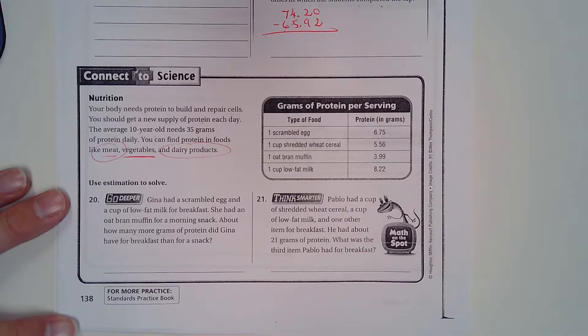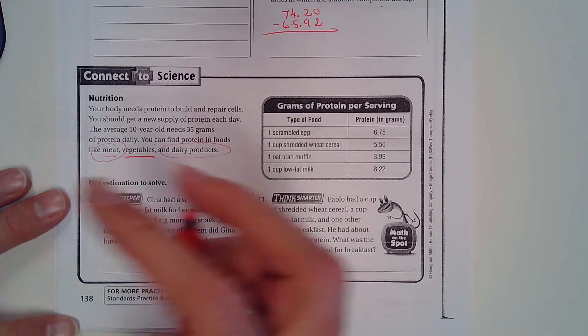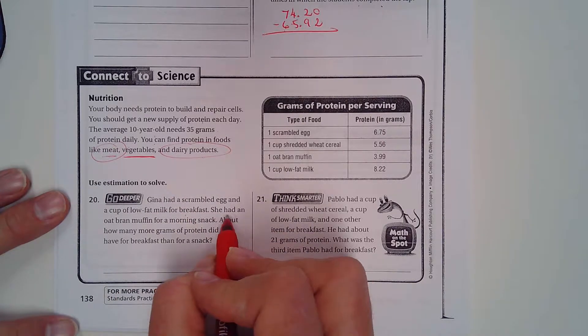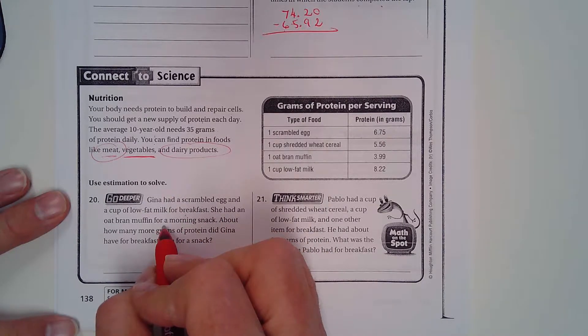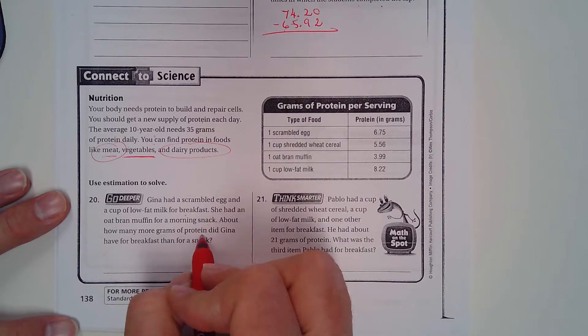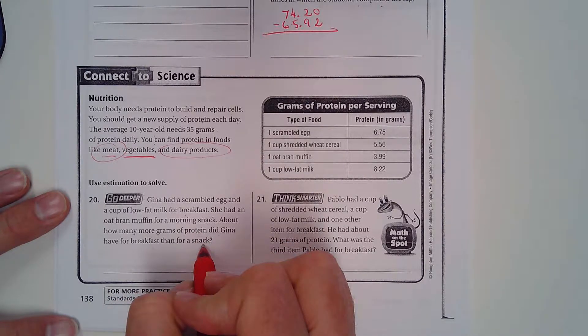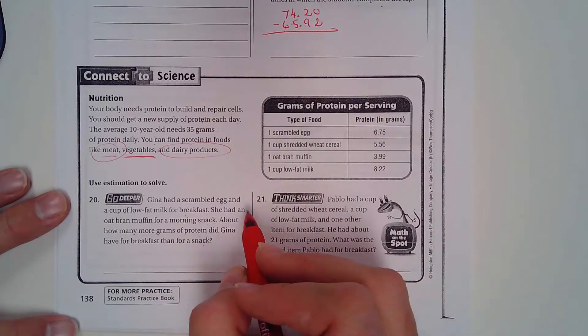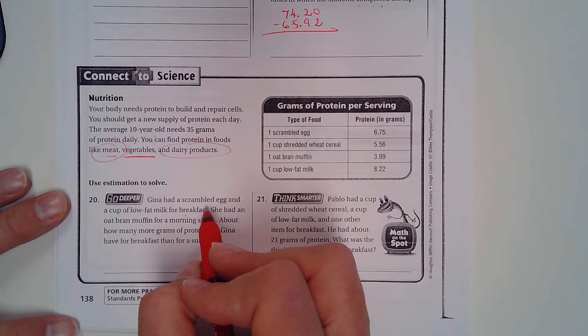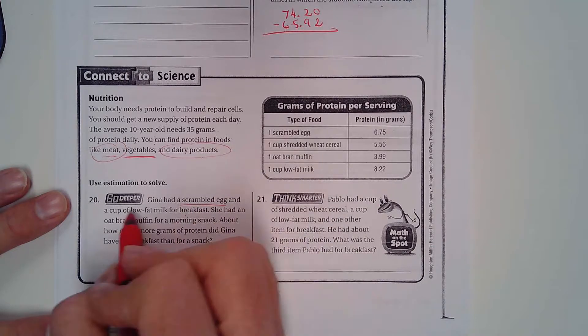So Gina had a scrambled egg and a cup of low-fat milk for breakfast. That's not much. She had an oat bran muffin for a snack in the morning. About how many more grams of protein did Gina have for breakfast than for a snack? So you're going to have to add up the amount of protein in a scrambled egg and a cup of low-fat milk.